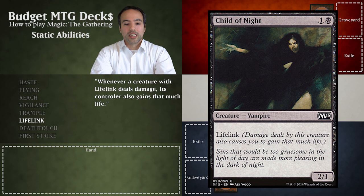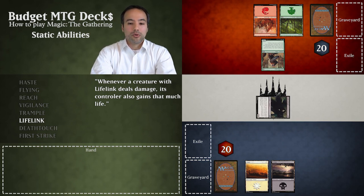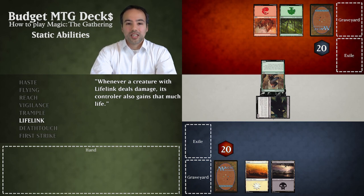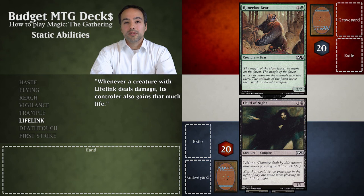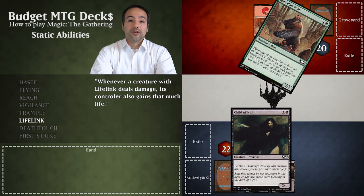In this scenario our opponent has a Runeclaw Bear and we have a Child of Night. It's our combat phase and we declare Child of Night to attack. Our opponent decides to block with the Runeclaw Bear. Damage is resolved simultaneously: the Bear does two points of damage to the Child of Night and the Child of Night does two points of damage to the Bear. This also causes us to gain two points of life. Notice how such life gain can yield us more than our starting life total. Both creatures took enough damage to destroy them and are put into the graveyard.